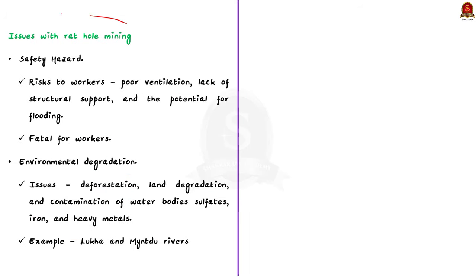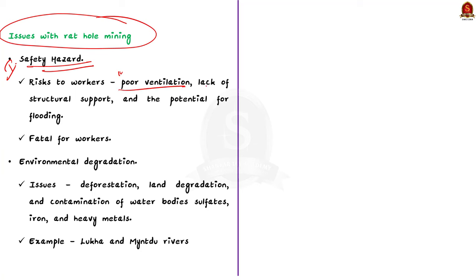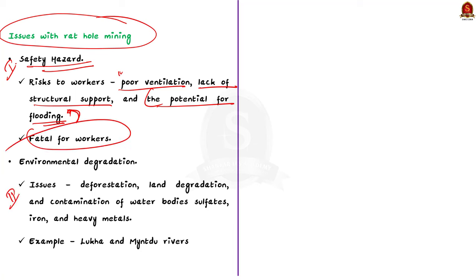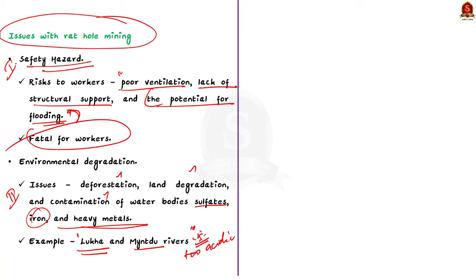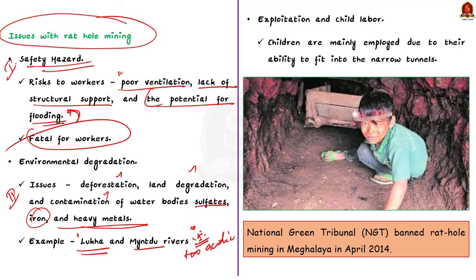Let us see the issues with rat hole mining. The first issue is safety hazards — rat hole mining poses various risks to workers, including poor ventilation, lack of structural support leading to mine collapses, and potential flooding inside the tunnels, which may turn fatal for workers. The second issue is environmental degradation — unregulated mining has led to deforestation, land degradation, and contamination of water bodies with high concentrations of toxic substances like iron and other heavy metals. For example, rivers Lukha and Myntdu became too acidic to sustain aquatic life due to pollution caused by rat hole mining. Third is exploitation and child labor — reports indicate exploitation of labor including children, who are mainly employed due to their ability to fit into narrow tunnels.